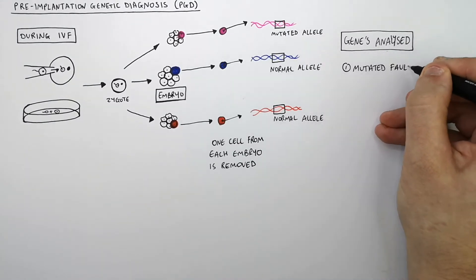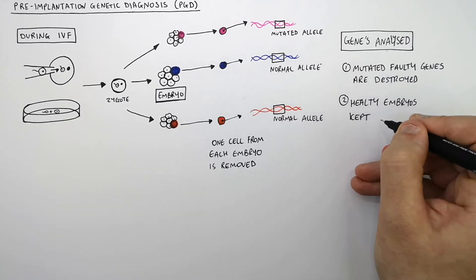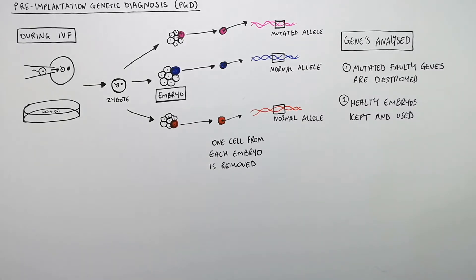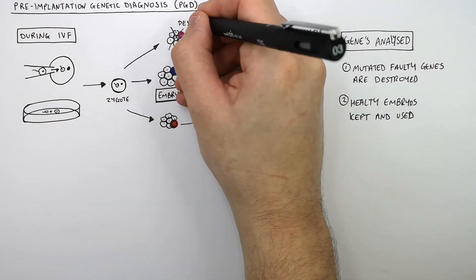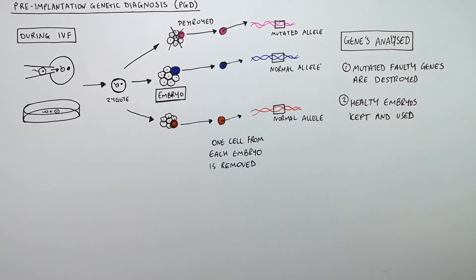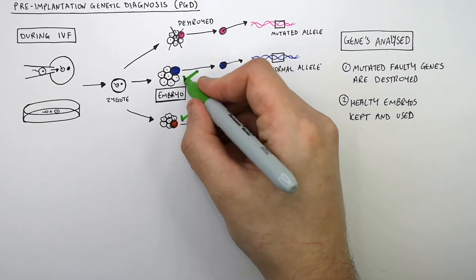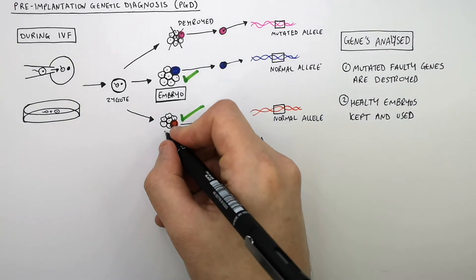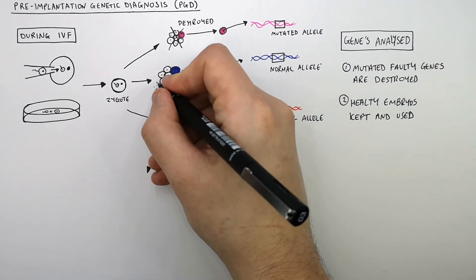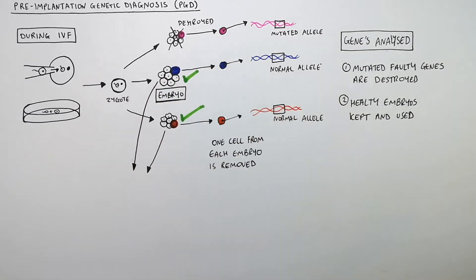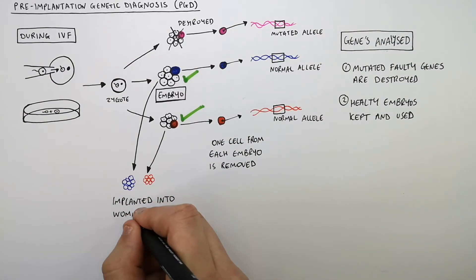Embryos with mutated genes are destroyed, and the healthy embryos are kept and transferred into the woman's uterus. This embryo has a mutated allele in its genome — therefore, it is destroyed and not transferred into the woman's uterus. Whereas these two embryos are healthy; they have normal alleles, so they're going to be transferred into the woman's uterus because they do not have the genetic disorder being screened for.